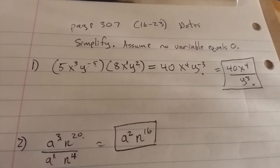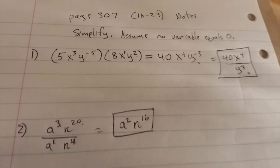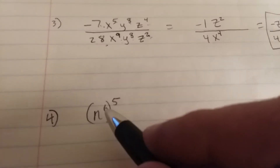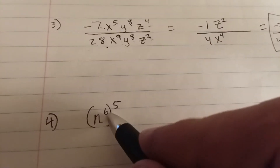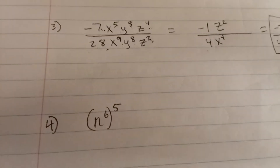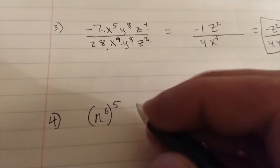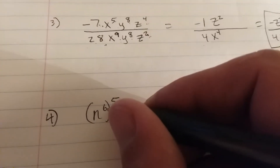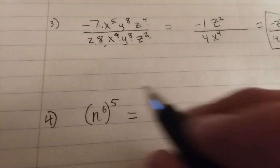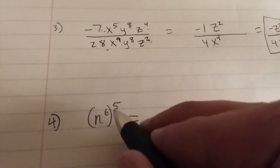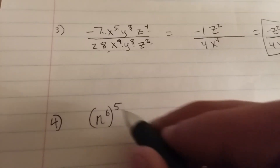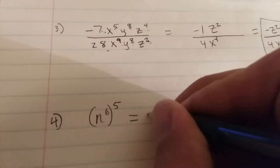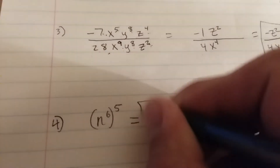Hello, one more problem for page 307. Example 4 here — when you have a power to a power, you multiply. A common mistake would be to put n to the power of 11, but that's wrong. You multiply when you do a power to a power, so it's going to be n to the power of 30.